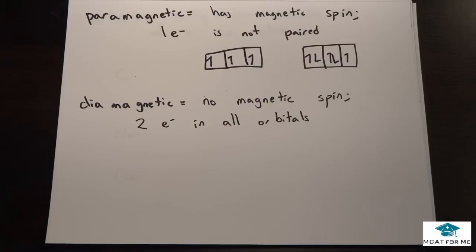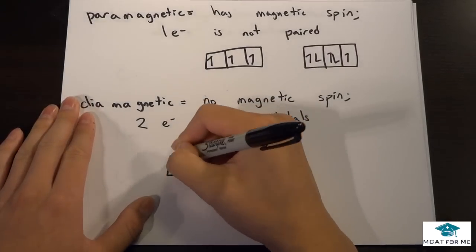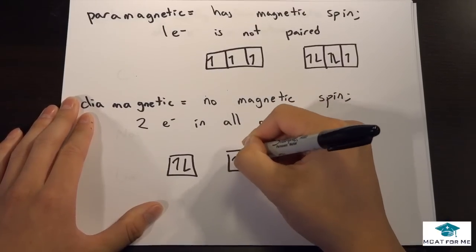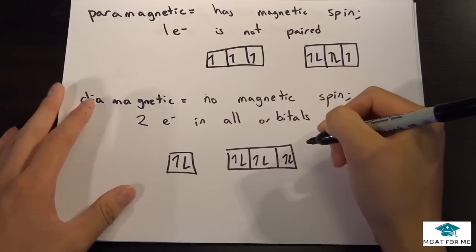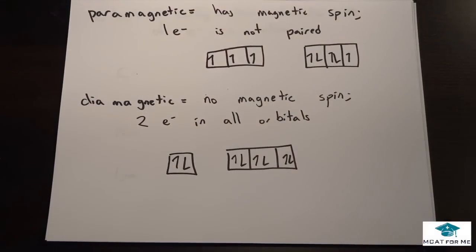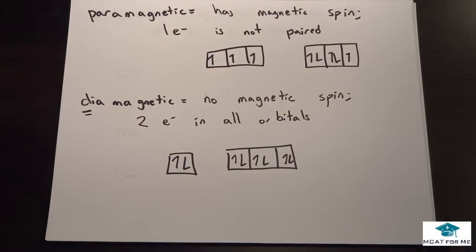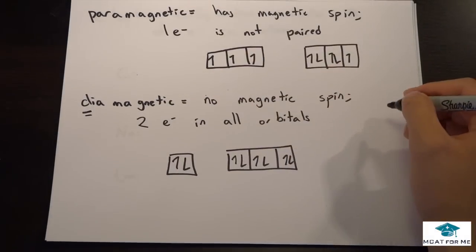Diamagnetic means it has no spin and it has two electrons in all the orbitals. So that's diamagnetic, and so is that. One way to remember this is just the prefix di obviously comes in two, so that means everything is paired, everything comes in two. And what we meant by no magnetic spin was,